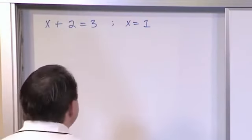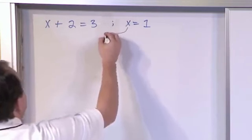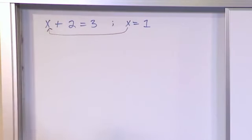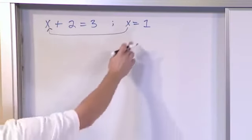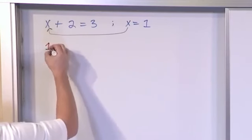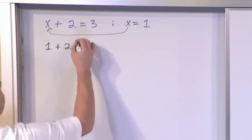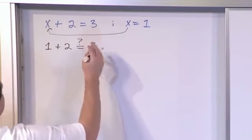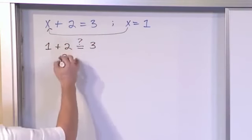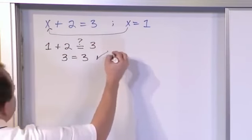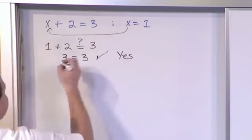The way you figure that out is you actually take x and you plug it in there and see if it satisfies, if it's true. So let's put 1 in here and what we'll have is 1 plus 2 equals, with a question mark because I'm not sure yet, 3. And I think you can realize and understand that 3 is equal to 3. So yes, this is a solution.